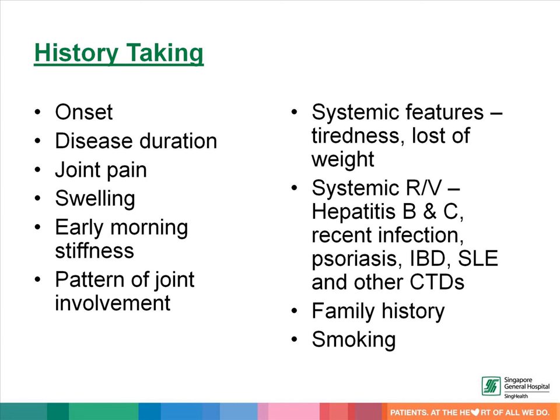We should look for features of other conditions that can mimic rheumatoid arthritis, which include hepatitis B and C, cirrhotic arthropathy, inflammatory bowel disease, SLE, and other connective tissue disorders. We should also explore family history and smoking history.